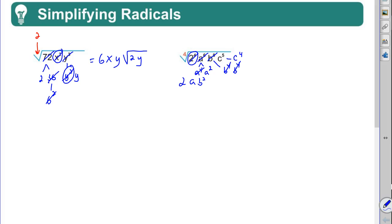And the c to the 5th - let's think of that as a c to the 4th times a c. Again, why did I go for all these fours here with the exponents? And the answer is because the index is a 4. So again, I can get a c out for that c to the 4th.